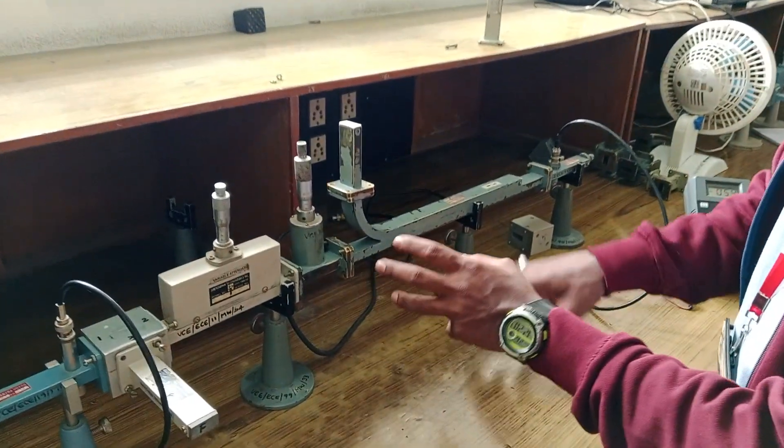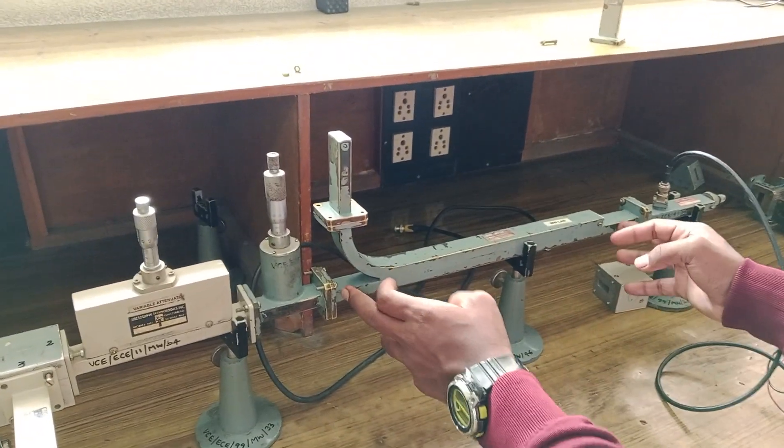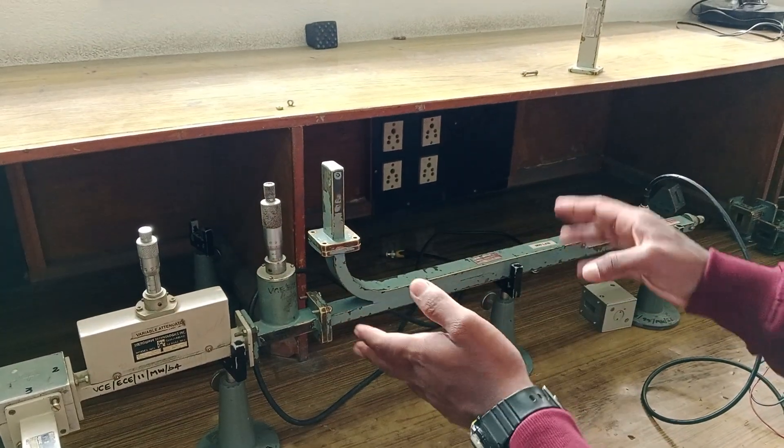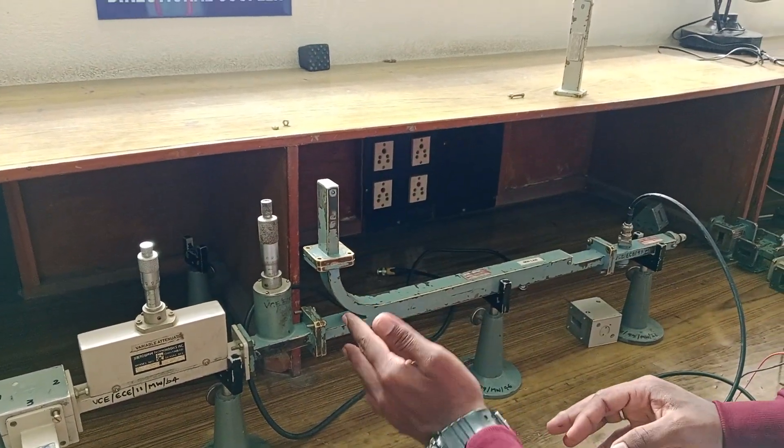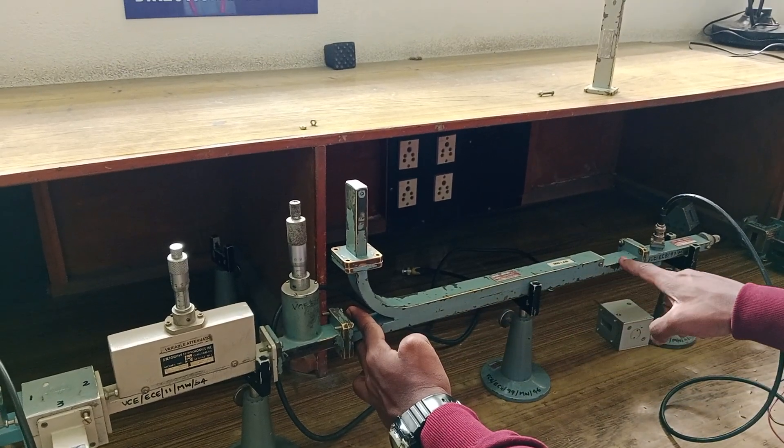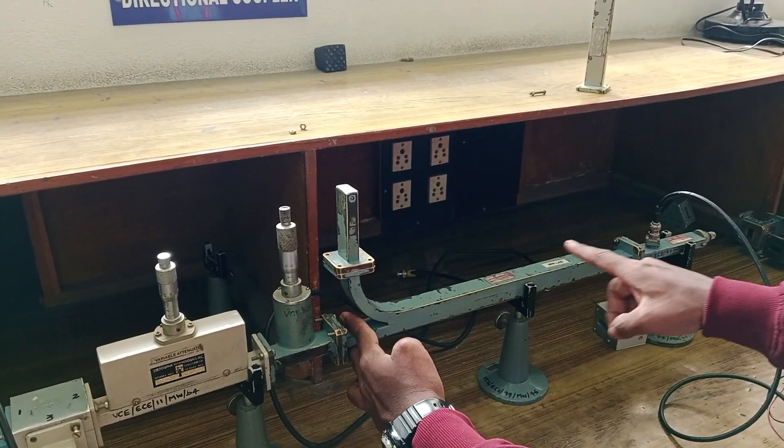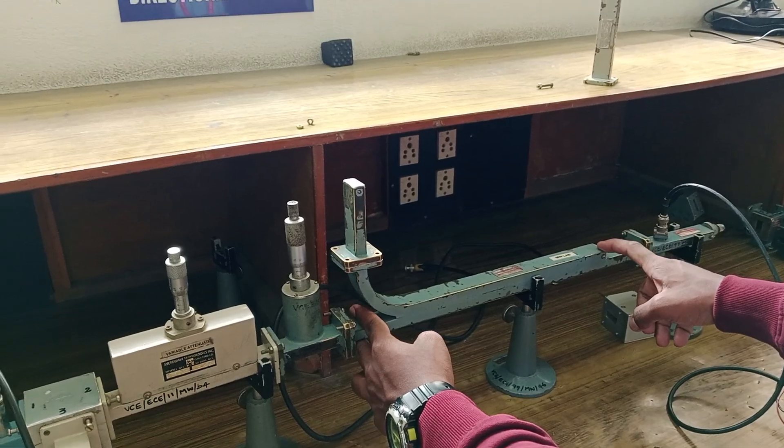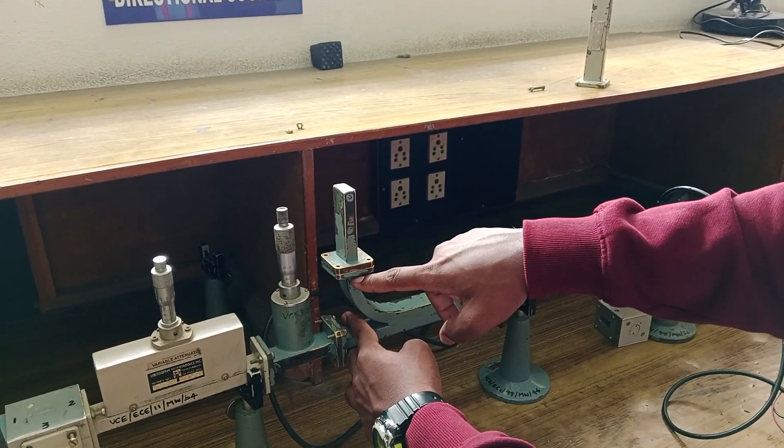For directional coupler, we have 4 ports in total: 1st port, 2nd port, 3rd port and 4th port. The numbers can be in any way. You have to remember only one thing: if you are giving input here, the port in the same arm will be the through port, and the port diagonal to it will be the coupled port, and the port adjacent to it will be the isolated port.